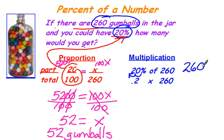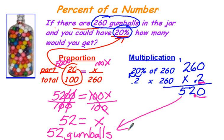Now all you have to do is work the problem at this point. 260 times 2 tenths or 0.2. 2 times 0. 2 times 6 is 12. Carry your 1. 4 plus 1 is 5. Now make sure you show your decimals. One decimal place in the problem, so one decimal place in the answer. And again, your answer is 52 gumballs.